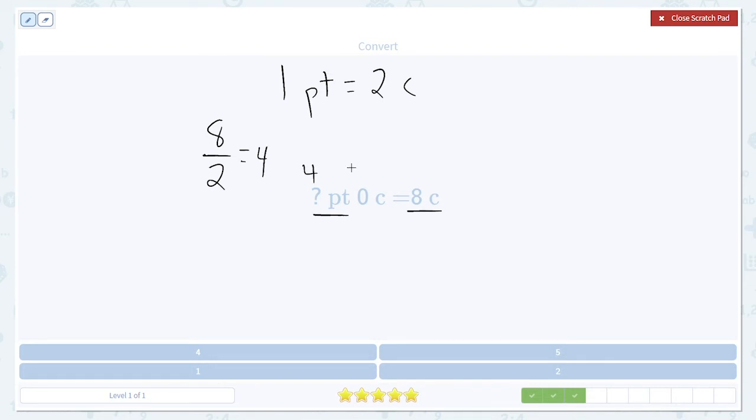Notice there is no remainder. 2 goes into 8 evenly. So there won't be a remainder, which is why it's 0 cups left over. So it's just 4 pints.